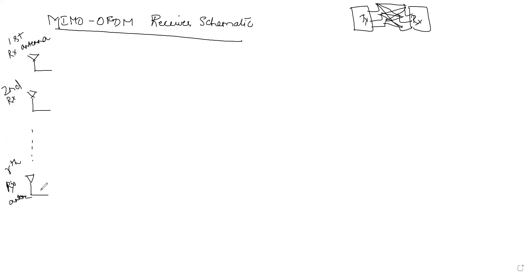At the receiving end, the cyclic prefix has been added at the transmitter, so when we receive we have to remove the cyclic prefix. There will be a block here that will remove the cyclic prefix — the CP removal block.